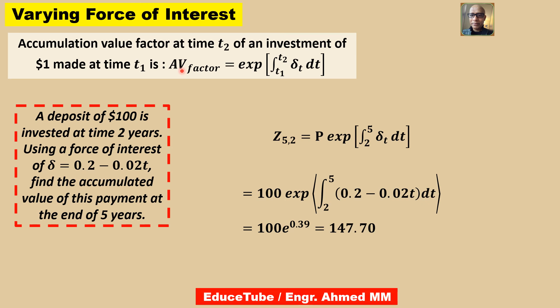So P into this factor, accumulation value factor to be multiplied by this. So to find this, we have to write it is 2 to 5 years. So 2 to 5 δ_t dt. δ_t, we know this is the equation. We will use this full expression. And doing the integrations, putting the lower limit, upper limit value, we will find this. Using calculator at an end, we will find it is 147.70 dollars. Very easy one. Only the thing is, we have to use these equations.